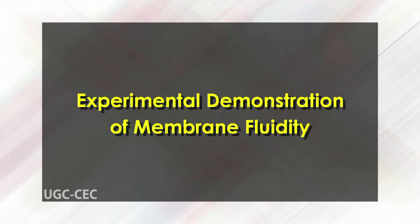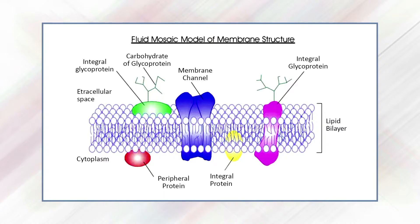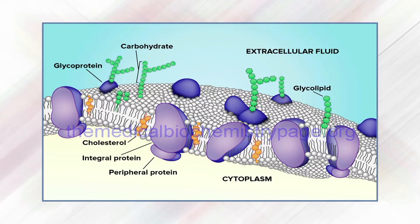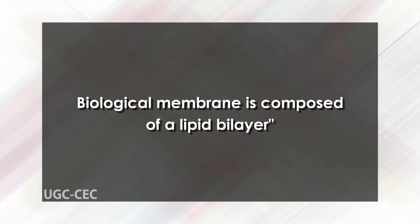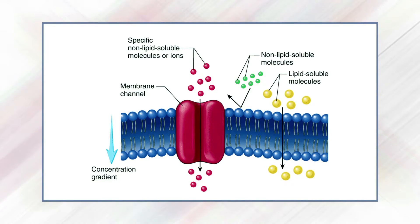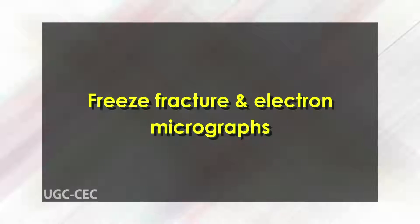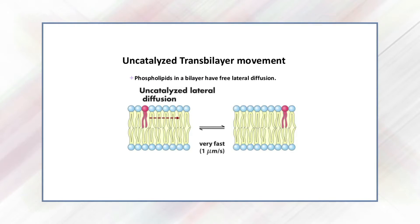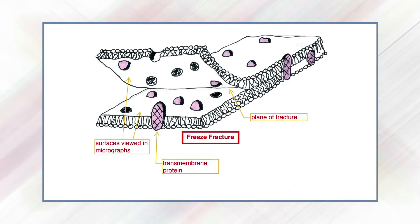The fluid mosaic model was originally proposed by S. Jonathan Singer and Gert Nicolson in 1972 to describe the general structure of a biological membrane — a lipid bilayer that is essentially a two-dimensional solution composed of lipids and proteins. One aspect of the model is that membrane proteins are randomly distributed throughout the plane of the membrane due to their mobility. This was verified using electron microscopy to view lipid bilayers cleaved by freeze fracture.